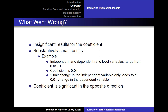For example, imagine you ran a regression with ratio level independent and dependent variables that both range from 0 to 10. If the coefficient was 0.01, that would mean that a one unit change in the independent variable would only lead to a 0.01 unit change in the dependent variable. In other words, a large change in the independent variable would only lead to a small change in the dependent variable.